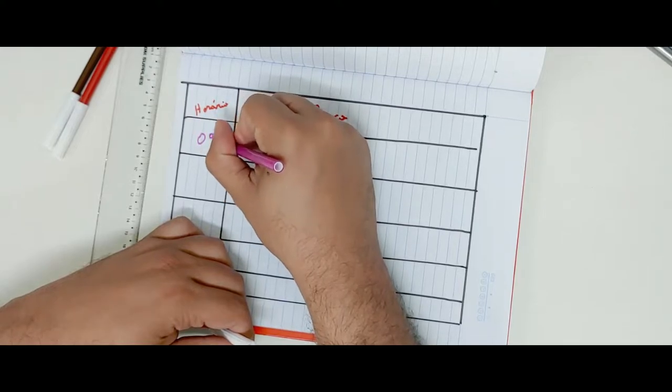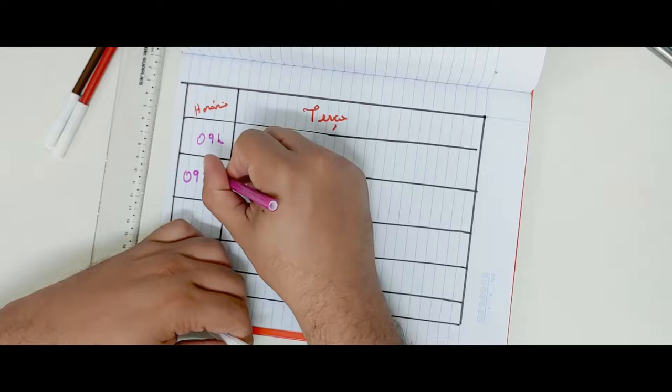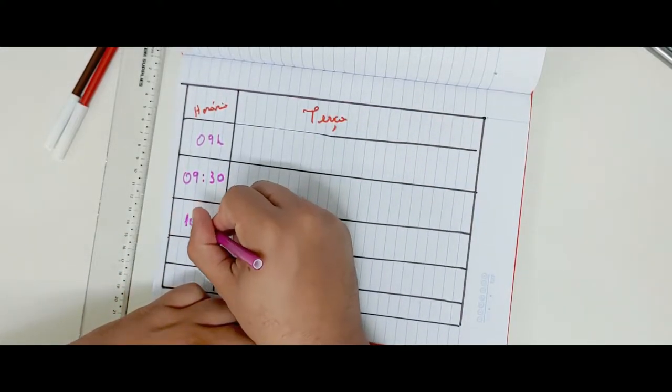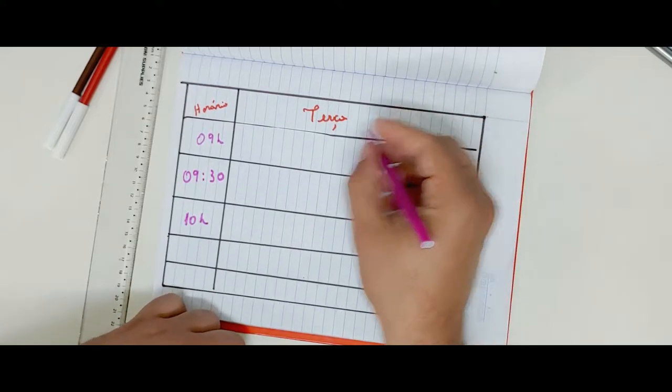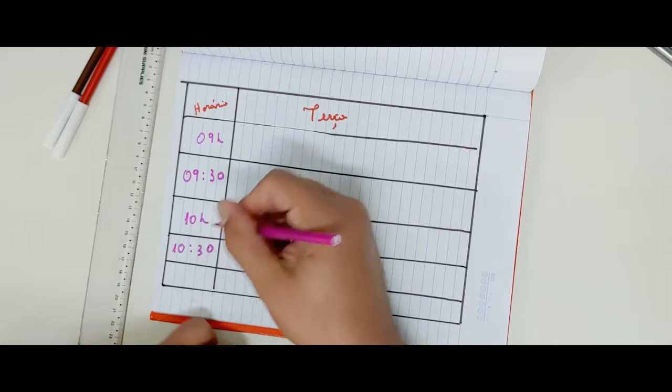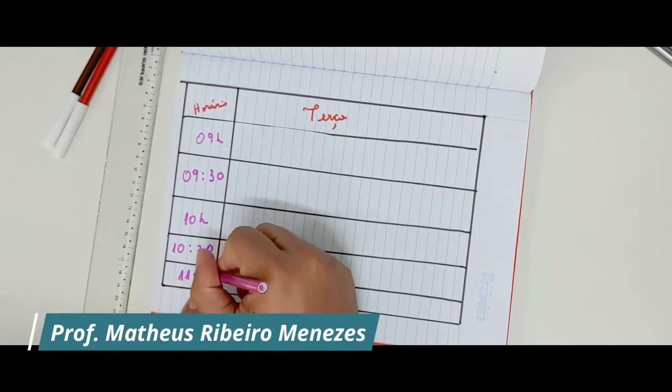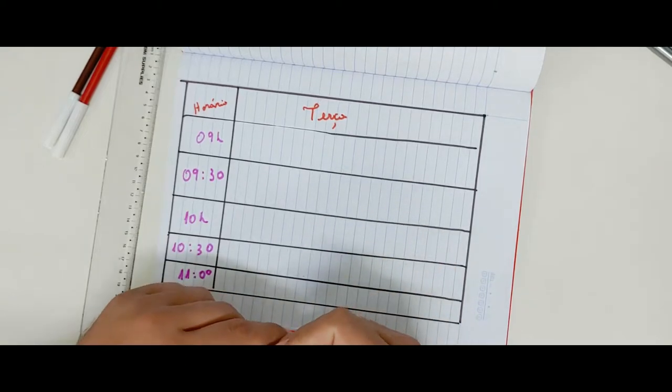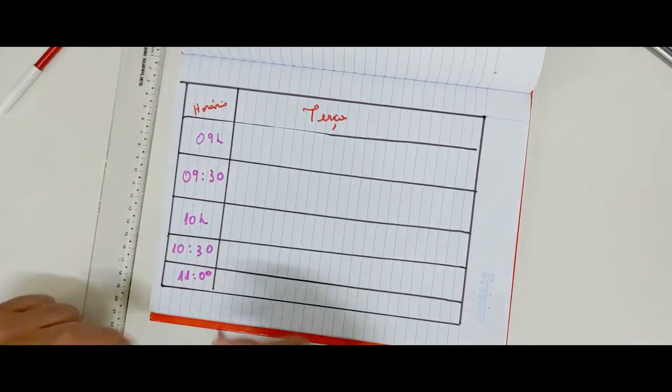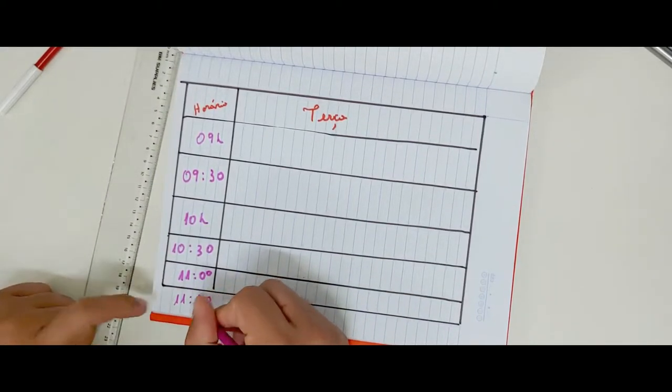So I'm going to put the hours. 9. 9:30. 10. 10:30. 11 o'clock. Let's extend it a bit to 11:30. That's why I leave a margin at lunchtime, right? Let's go then. Let me pick a color here. Dynamic. This green. Ready. It looks nice.